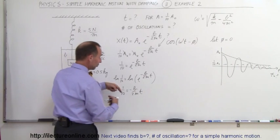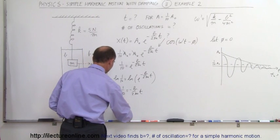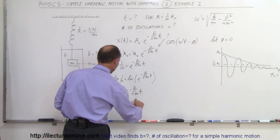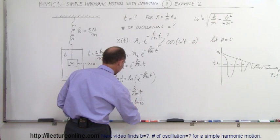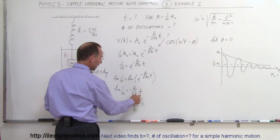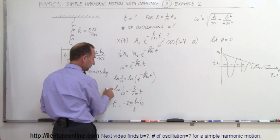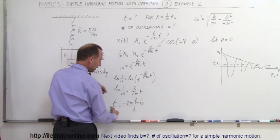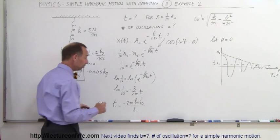And then we solve that equation for t, turning it around and cross-multiplying, we get t is equal to, let's see, minus 2m times the natural log of 1 tenth divided by b. So I multiply the 2m over here, took the negative, put it over here, take the b divided here, and then turn the equation around.